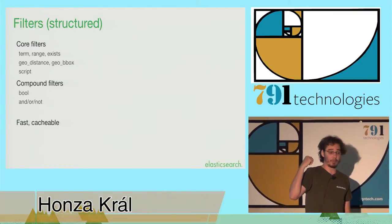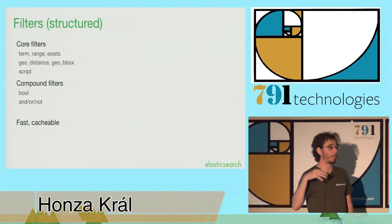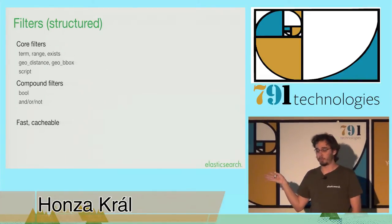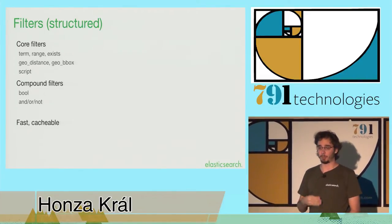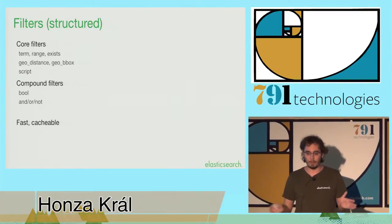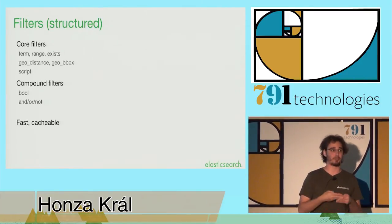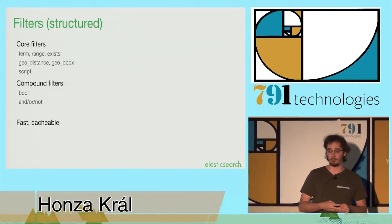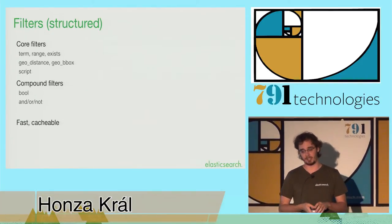So again, with filters, you have the core filters and the compound filters. Pretty much the only compound filter that you need to care about is the bool filter that allows you to compound the individual filters very effectively. So basically, it by default uses the caches and the bit sets inside.